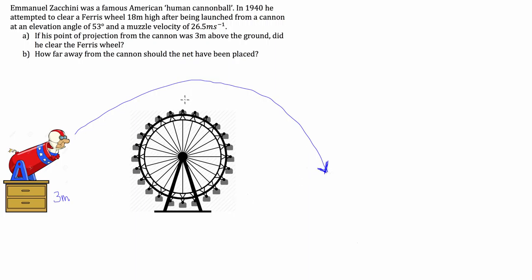So what do we have to do? With any projectile motion, you have to break his launch velocity into its horizontal and vertical components. We'll draw a relatively quick vector triangle here. We've got a right angle, this angle here is 53 degrees, and this side here is represented by the launch muzzle velocity of 26.5 meters per second.